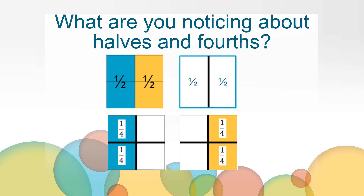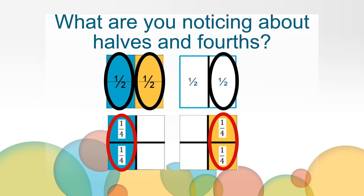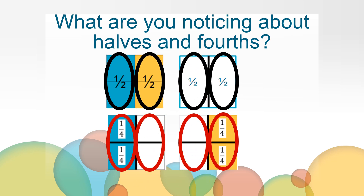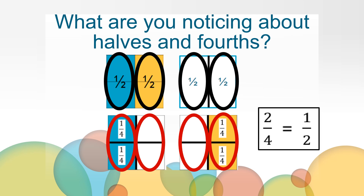What are you noticing about halves and fourths? Are you noticing that one half is equivalent to two fourths like this, or like this? So what can we determine about one half and two fourths? Because they have the same whole, we can say that one half is equal to two fourths. We can also say that one half and two fourths are equivalent fractions, because they are naming the same amount of the whole.